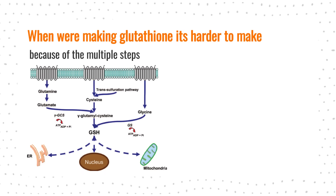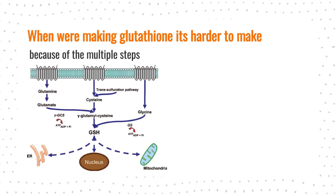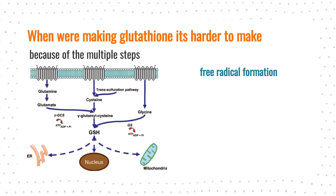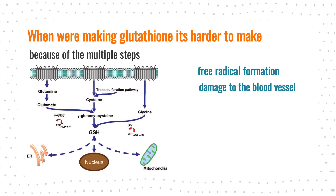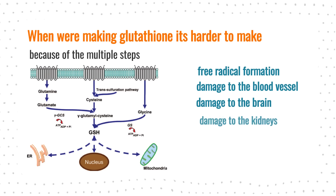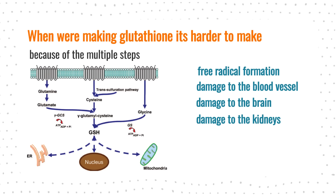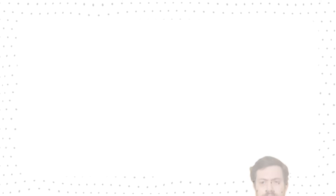Antioxidants are protective against free radical formation and damage to the blood vessels, the brain, the kidneys, and all sorts of things. That's why glutathione is so important and why N-acetylcysteine becomes very important, especially when we're trying to raise levels of glutathione.